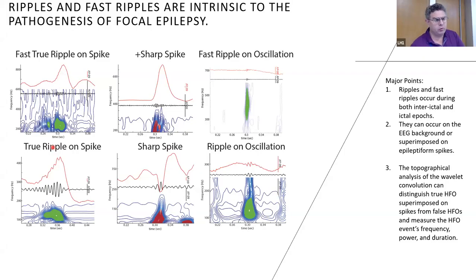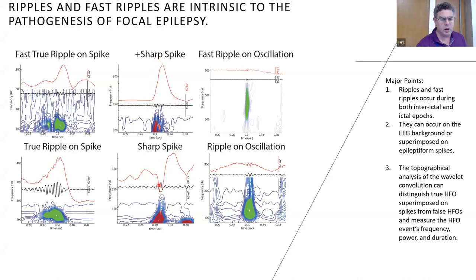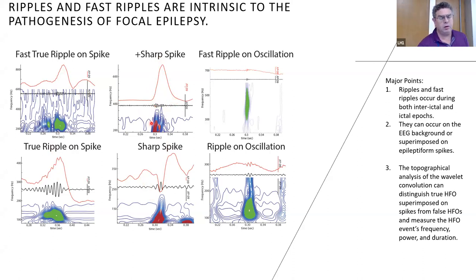Ripples and fast ripples can occur superimposed on epileptiform spikes. However, sharply contoured waveforms, including epileptiform spikes, without fast ripples or ripples, when bandpass filtered, can result in ripples and fast ripples that are artifactual. These events can be identified and discarded using special methods that can also quantify the spectral content, power, and duration of fast ripples and ripples.